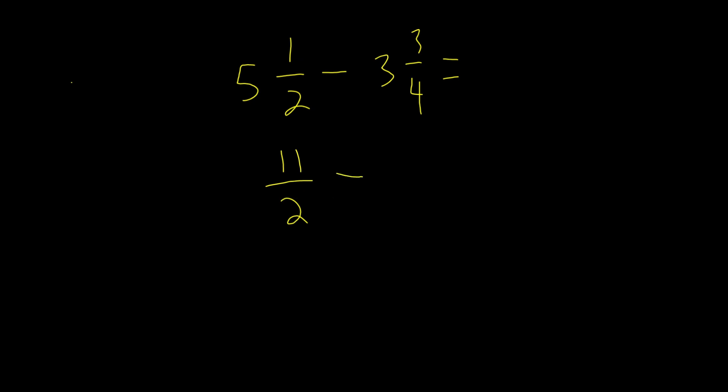Now we subtract this from, let's convert this into a mixed number. 4 times 3 is 12, 12 plus 3 is 15, so our new numerator is 15 divided by, we keep our old denominator, 4.